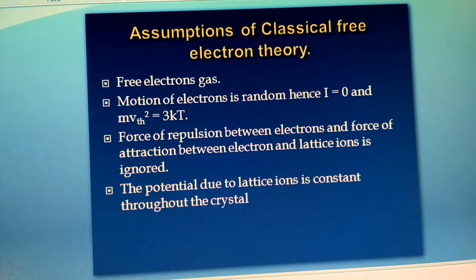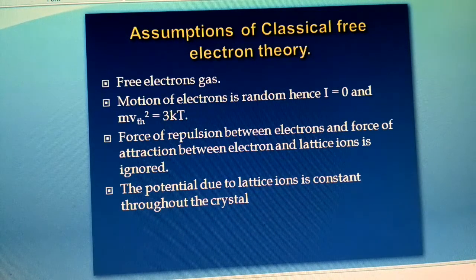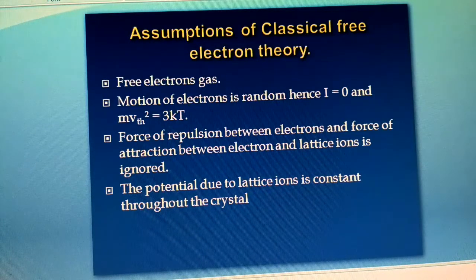The last assumption is that the potential due to lattice ions is constant throughout the crystal. The lattice ions are nothing but the nuclei, which are at fixed positions while electrons move throughout the metal. Since all lattice ions are at fixed positions, the total potential due to lattice ions remains constant throughout the crystal, and this potential is sometimes also ignored.